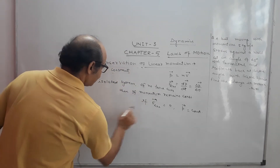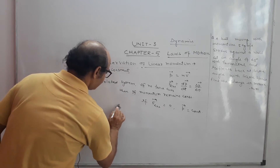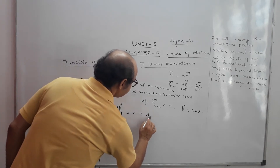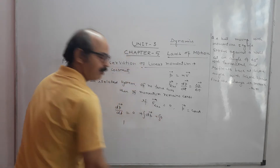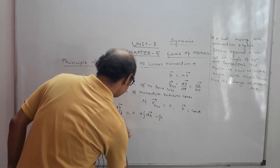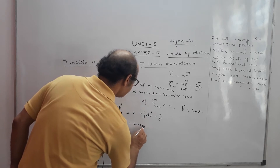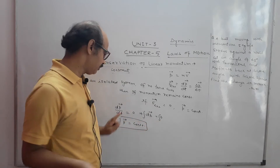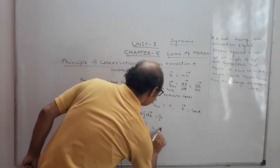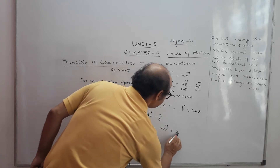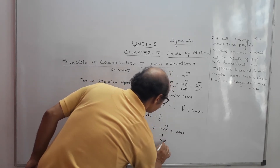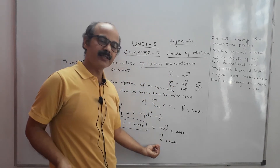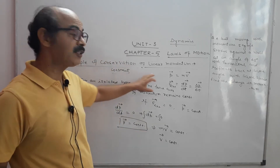If F external is equal to zero, then dP by dT is equal to zero, so dP is equal to zero. Integrating, P is constant — because a constant's differentiation is zero, and integral of zero is a constant. So P equals MV equals constant, meaning V is also constant. If force does not work, this is the conservation of linear momentum.